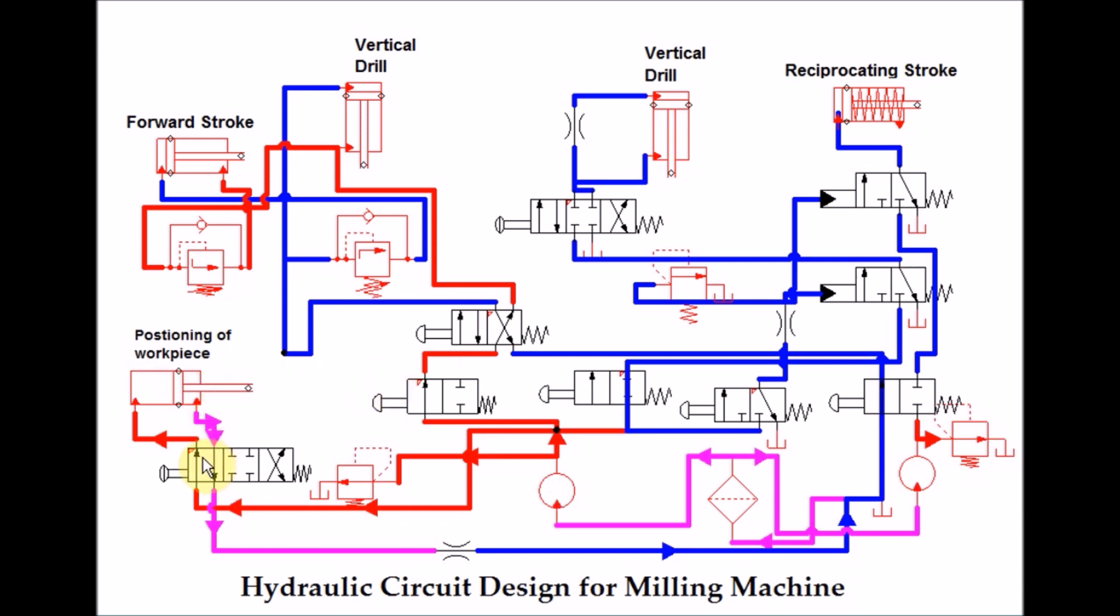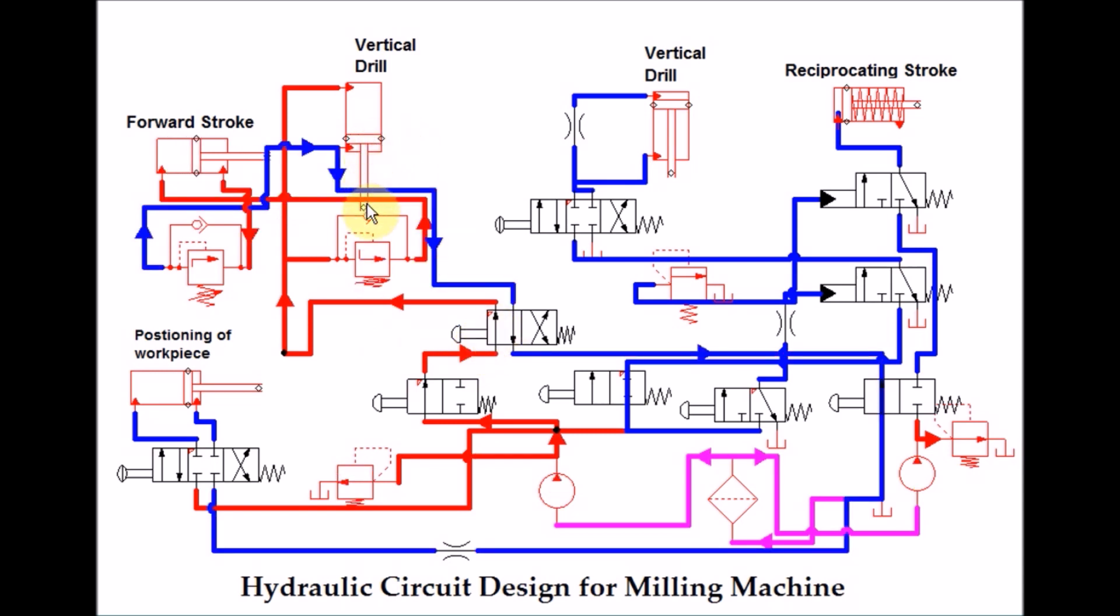So we can position our workpiece over here. After that we can actuate this and first it will vertically clamp our workpiece. Then the forward stroke of cutting is done.